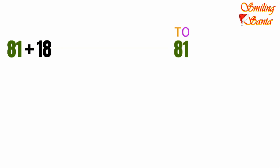Here we have 81 plus 18. In 81, eight will go to the tens place and one will go to the ones place. In 18, one will go to the tens place and eight will go to the ones place. Now tell me: which ones do we need to add first — the numbers in the tens place or the numbers in the ones place? Yes, you got it right. We need to add the numbers in the ones place first.